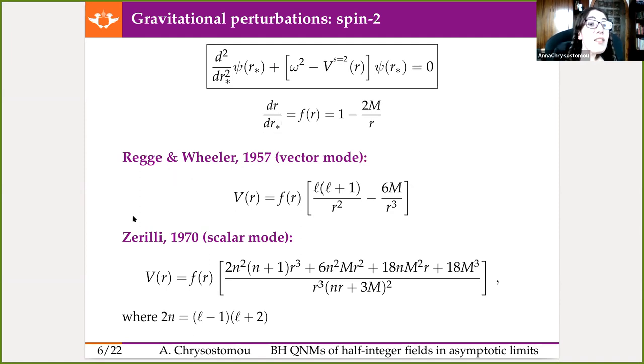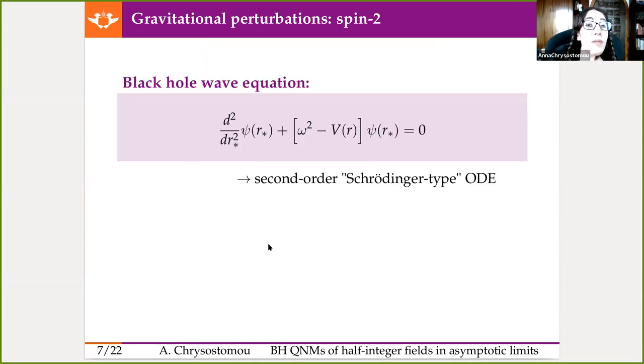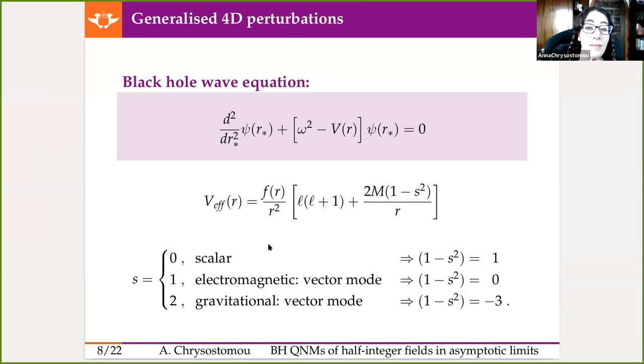So Regge and Wheeler introduced a first order perturbation, which we now know as a weak field limit, into the Einstein field equations. And they found that the radial behavior for the gravitational mode, the vector mode of the gravitational field specifically, could be expressed in this very neat form. And that was with the introduction of the so-called tortoise coordinate. A few years later, Zerilli extended this to include also the scalar mode. So what we found was that the gravitational perturbations, in four dimensions at least, for the Schwarzschild black hole, could be described completely with the second order ordinary differential equation, which the literature tends to refer to as a Schrodinger-type equation for the sole reason that you can apply the same kind of numerical techniques that we ordinarily use to solve the Schrodinger equation to this expression.